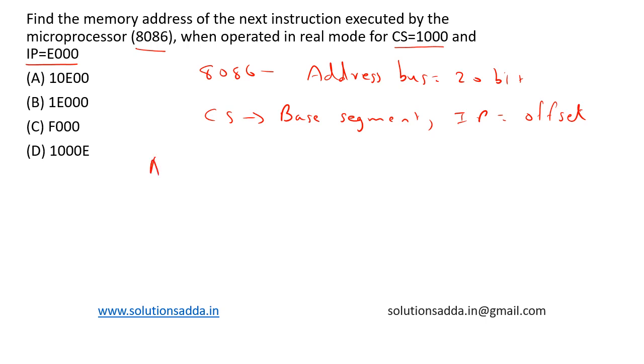So to calculate the address we use this formula: segment into 10h (that is hexadecimal) plus offset. All our values are hexadecimal. So it is given that base segment is equal to 0x1000 (that is CS or segment part) and the offset part is 0xE000.